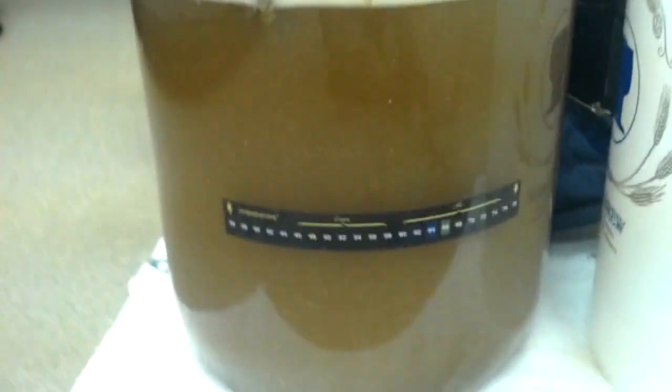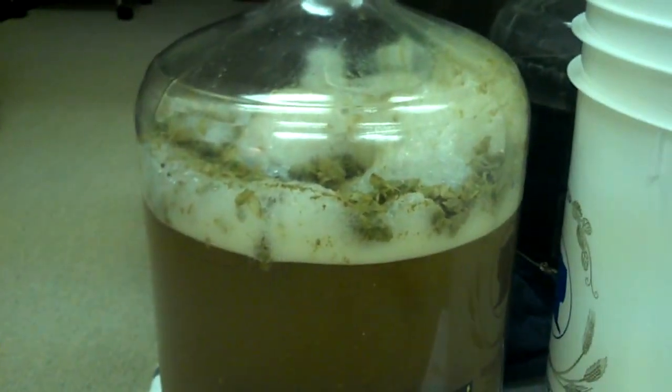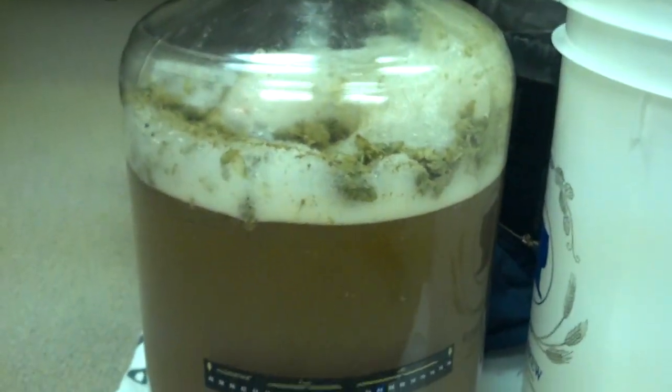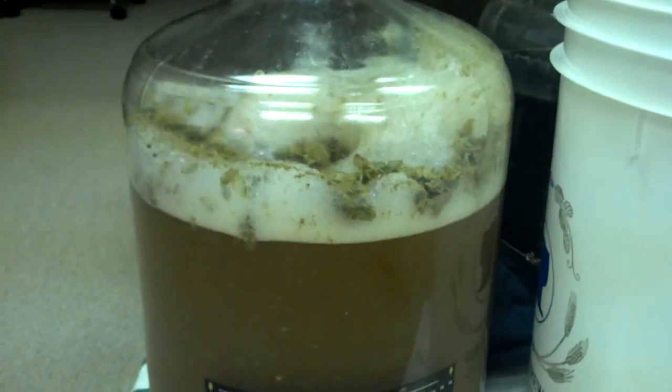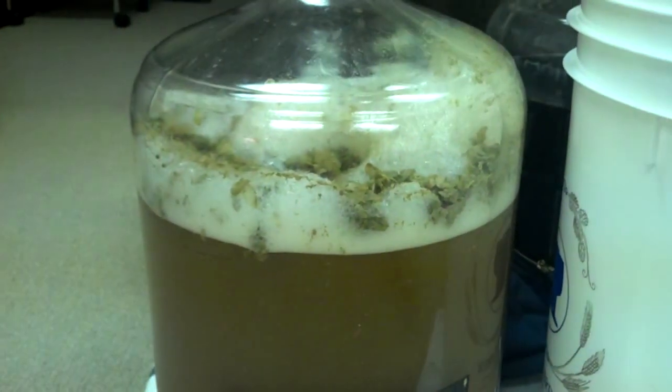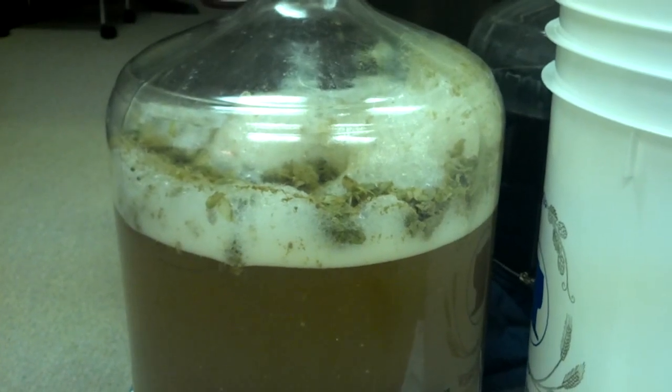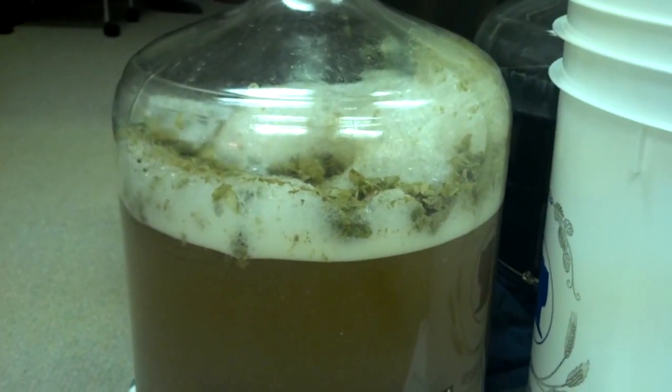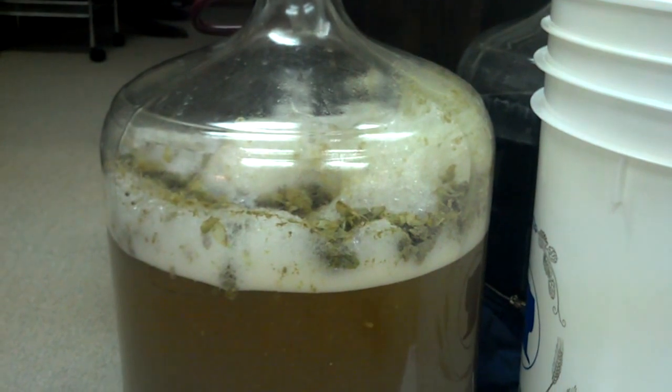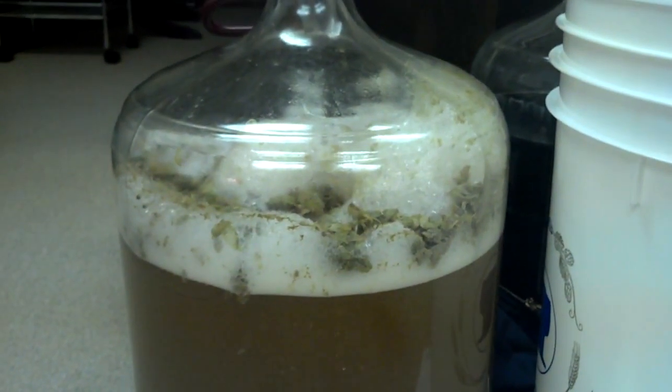I used an ounce of Hallertau hops, I'm not saying that right, and then an ounce of Tettnang. The Hallertau was whole cone hops, just like you see here left in it. And at some point pretty quick, I'll address the fact that I am pitching in all kinds of awful trub into my fermenter, and that's bad.